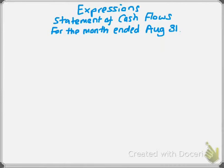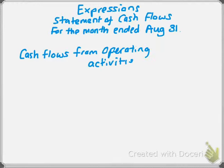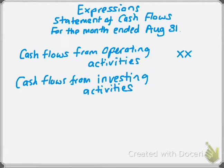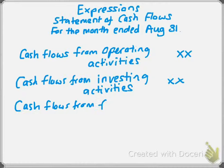Then we're going to have cash flows from operating activities listed as the first section. I'm going to put Xs for the numbers because we're not going to learn how to prepare this in detail, as it's a bit of a complex statement. The next section would be cash flows from investing activities — remember, this only deals with cash flows. Finally, we will have cash flows from financing activities.